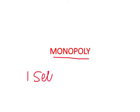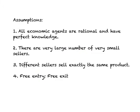Let us now start a new topic called monopoly. By monopoly we mean a market structure in which we have one seller. But before we do that, let us revisit the assumptions we made about perfect competition. For perfect competition we require that all economic agents are rational and have perfect knowledge, there are a very large number of very small sellers, different sellers sell exactly the same product, and the fourth assumption is free entry and free exit.